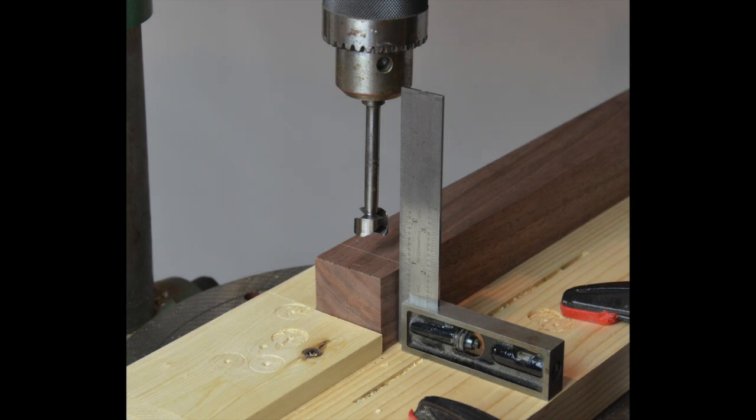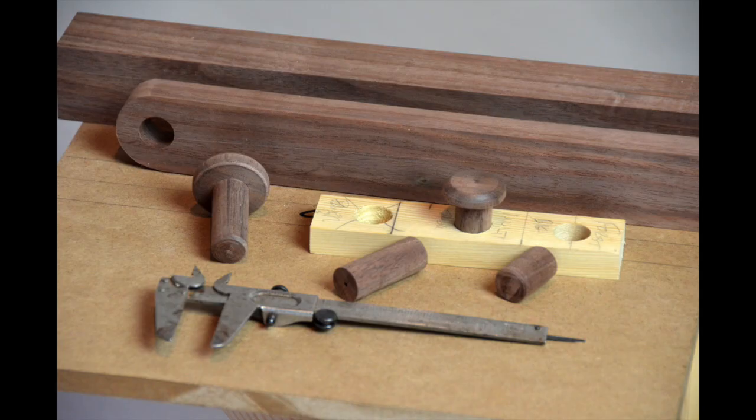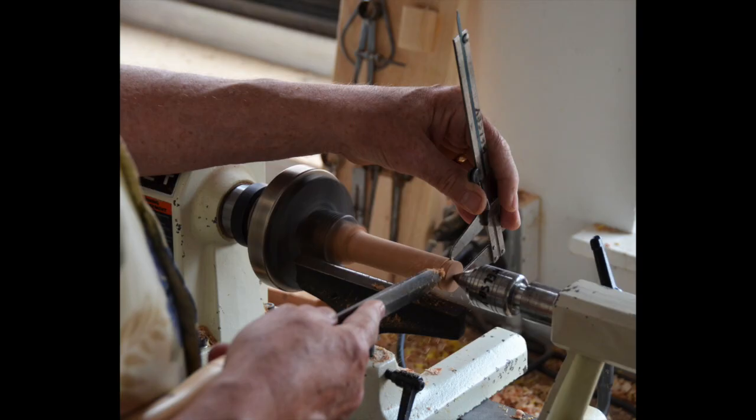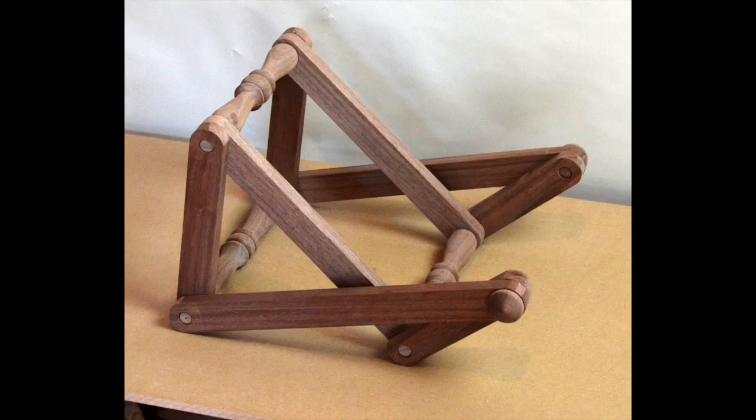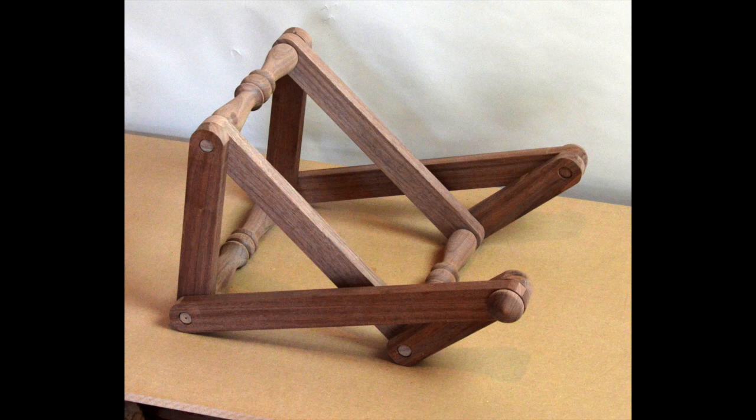So measure carefully and bore clean straight holes. Make a gauge so you can turn the pivot pins to a nice smooth fit, not too tight, not too loose. And make simple jigs so all the bars come out the same. The pivots also can be made as tenons on both ends of separator turnings.